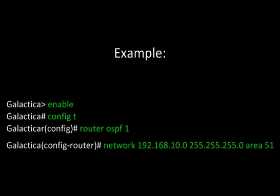Here's an example of setting up OSPF on a Cisco router. First, go to privilege mode with the enable command, then go to global configuration mode with the config t command, then go to router configuration mode with the command router OSPF and specify a process ID. In router configuration mode, you need to enter a network that you wish to advertise, which would be the IP address, the subnet mask, and then specify an area, in this case area 51.